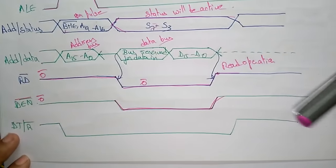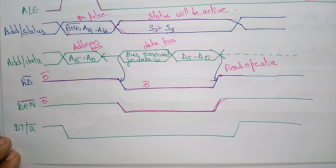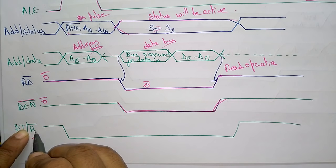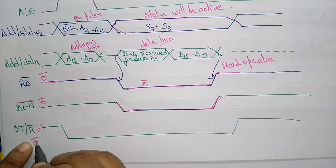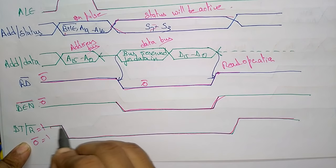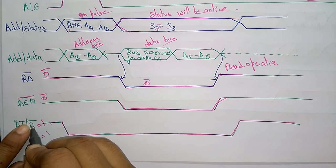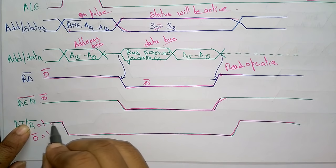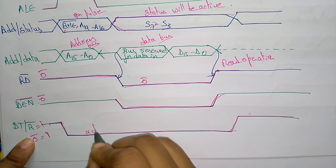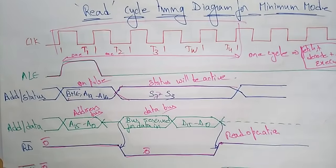Read clock cycle means reading — receiving data. Data transmitting means writing. So for reading, we make DEN bar active by putting 0 (down). Whenever DT/R bar is low (0), it means read mode is active. So during the read cycle, DT/R bar goes to 0, making read active from T2 to T4. This is about the read timing cycle.